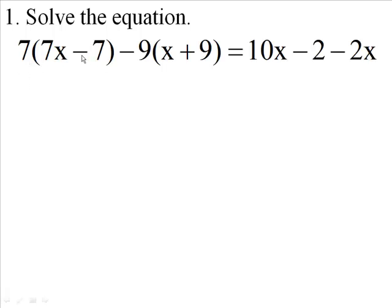We're going to distribute the 7 onto this parentheses. We'll have 7 times 7x, 49x, 7 times 7, 49. We'll have minus 9x and minus 81.